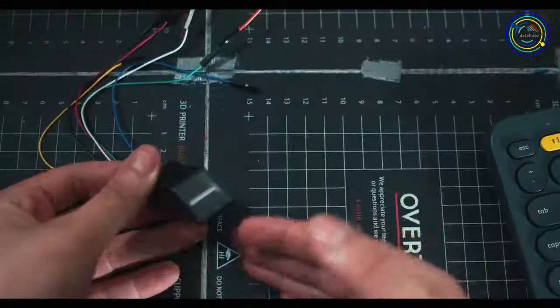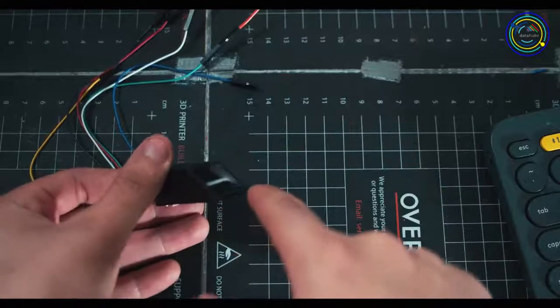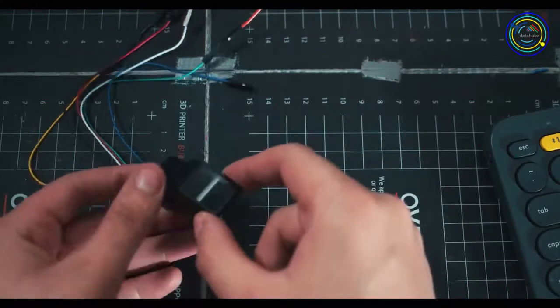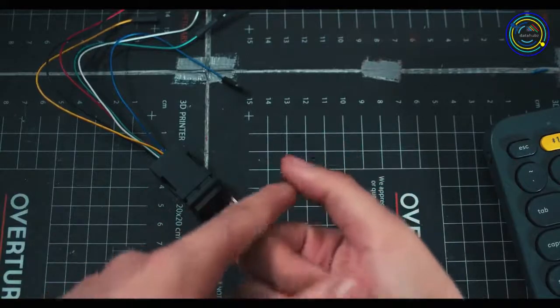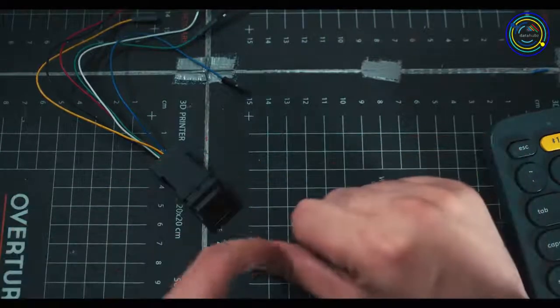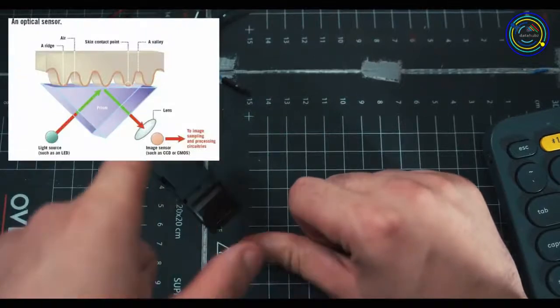There's different types of fingerprint sensors. This is an optical one, and if you look closely you can kind of see this prism inside. What's happening is you're shooting out a ray of light and it's bouncing off the ridges on your finger which create your fingerprint, then it bounces off of that and goes back into the sensor.